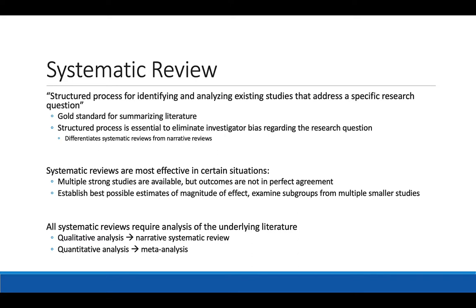Broadly speaking, a systematic review is a structured process for identifying and analyzing existing studies that address a specific research question. It's considered the gold standard for summarizing literature. You can write a narrative review in which you're simply pulling studies that prove the points you're making, but there are no requirements for how unbiased you are. A systematic review provides a structured process essential to eliminate investigator bias, and this is what really differentiates a systematic review from a narrative review.